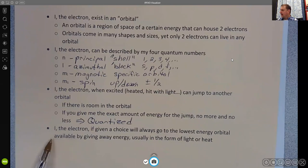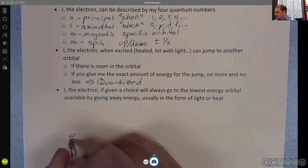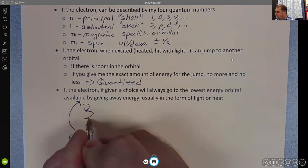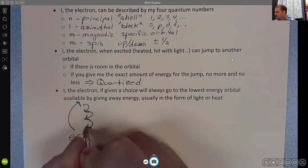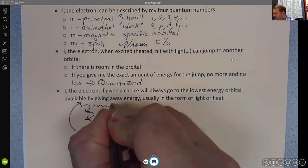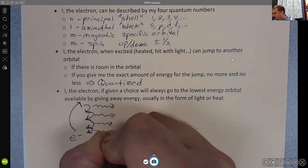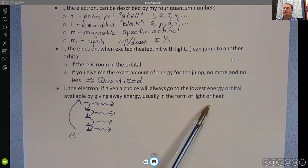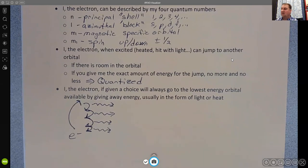Finally, I, the electron, if given a choice, will always go to the lowest energy orbital available by giving away energy, usually in the form of light or heat, which is why when you see an electron get excited, that electron can then fall through a series of steps to come back to the original state. Each of those might give off light, but they don't have to. There are other ways the atom or the electron can lose energy. Heat is one of those. That's really a topic for another class.